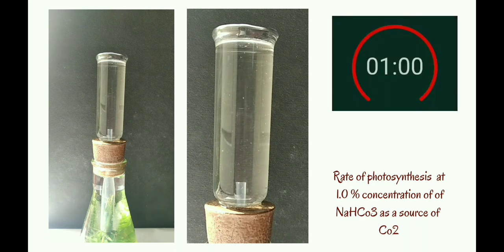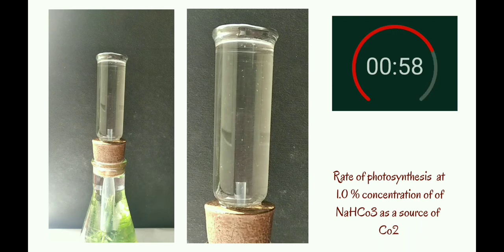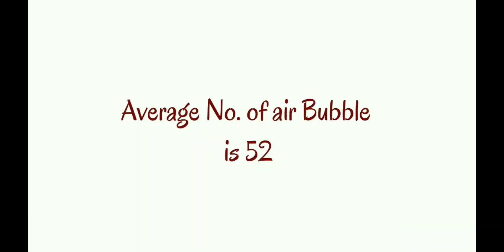The rate of photosynthesis at 1% sodium bicarbonate solution is 51. Take two more trials and find the mean value for 1% sodium bicarbonate solution. The average value is 52 — that is the mean value.